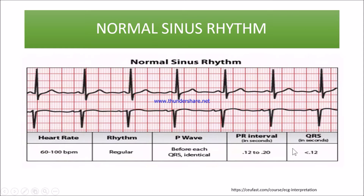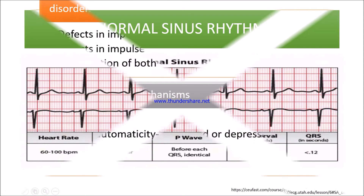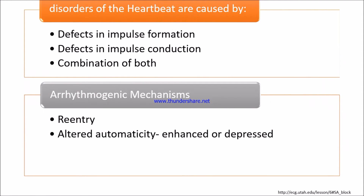Let's see the disorder of the heartbeat and the cause of disorder. When there is an impulse formation defect, impulse conduction defect, or a combination of both, it will affect the heart rate and rhythm. The arrhythmia mechanism may be either reentry of impulses or altered automaticity of our heart.